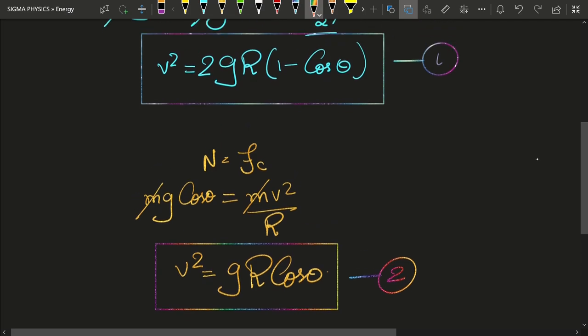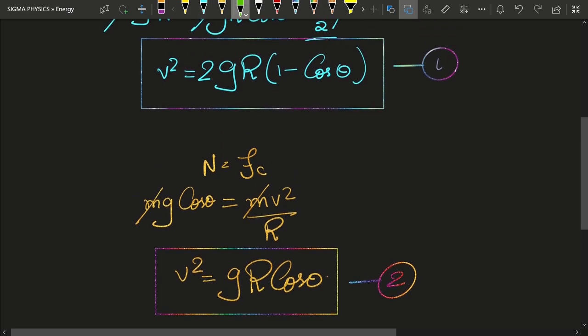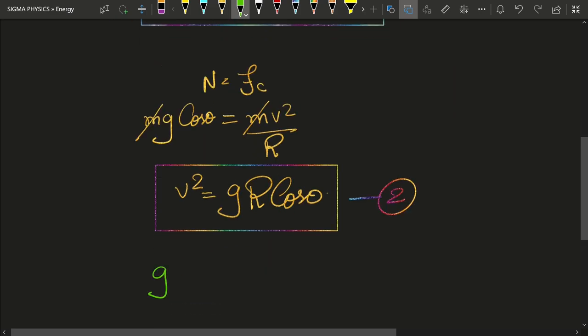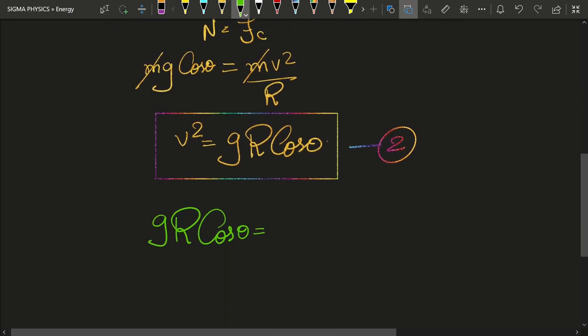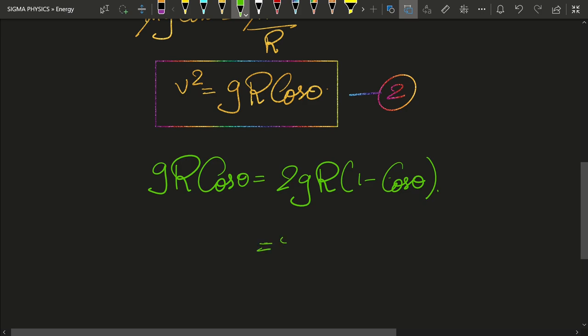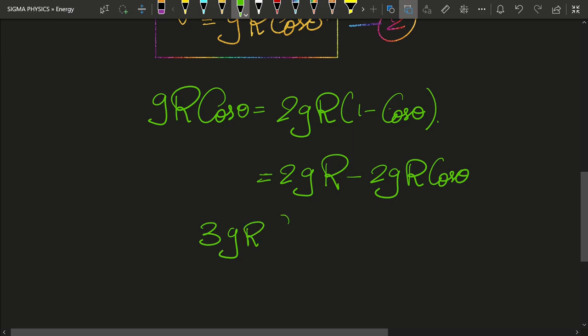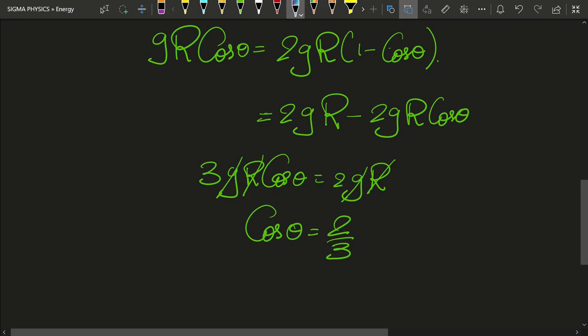And now you can see that both equation number 1 and equation number 2 give us v squared. And hence, what we will get is that g r cos theta is equal to 2 g r 1 minus cos theta. And now what we are going to do is open the brackets and rearrange the terms. So I will be left with 2 g r minus 2 g r cos theta. So we will get 3 g r cos theta is equal to 2 g r. And g r will cancel on both sides. So I will get cos theta is equal to 2 by 3. And that is what we were searching for in this problem.